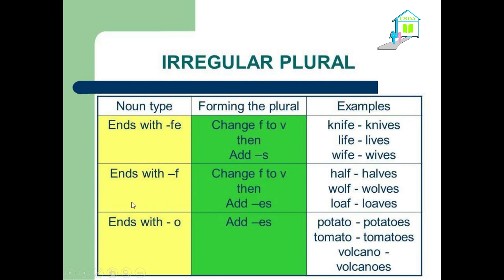Moving on to the second type of irregular plurals. Here we have some nouns which end with F — change the F into V, then add ES. For example: half — the word ends with F, we change F into V, then add ES — giving us 'halves.' The same thing for wolf. Also: tomato → tomatoes, volcano → volcanoes.